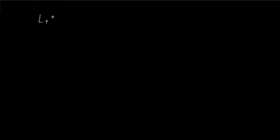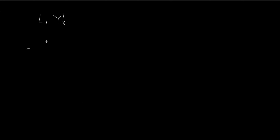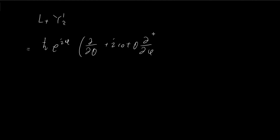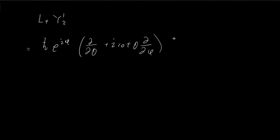Now the next step is to apply the erasing operator directly to y12. The erasing operator is equal to e to the power of iφ, then the partial derivative with respect to θ, minus i cotangent θ times the partial derivative with respect to φ. And y12 is a constant multiplied by sin θ cosine θ e to the power of iφ.